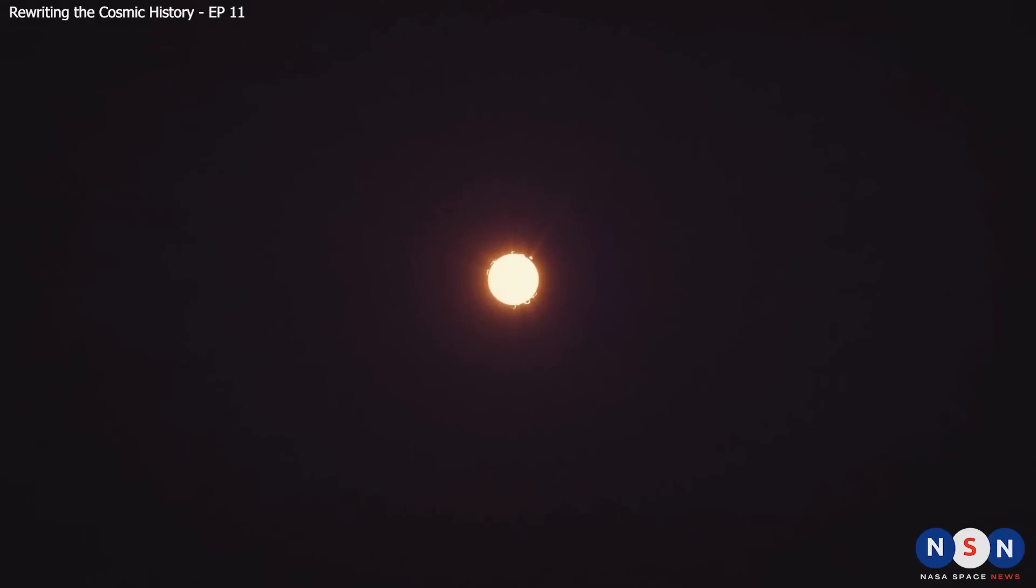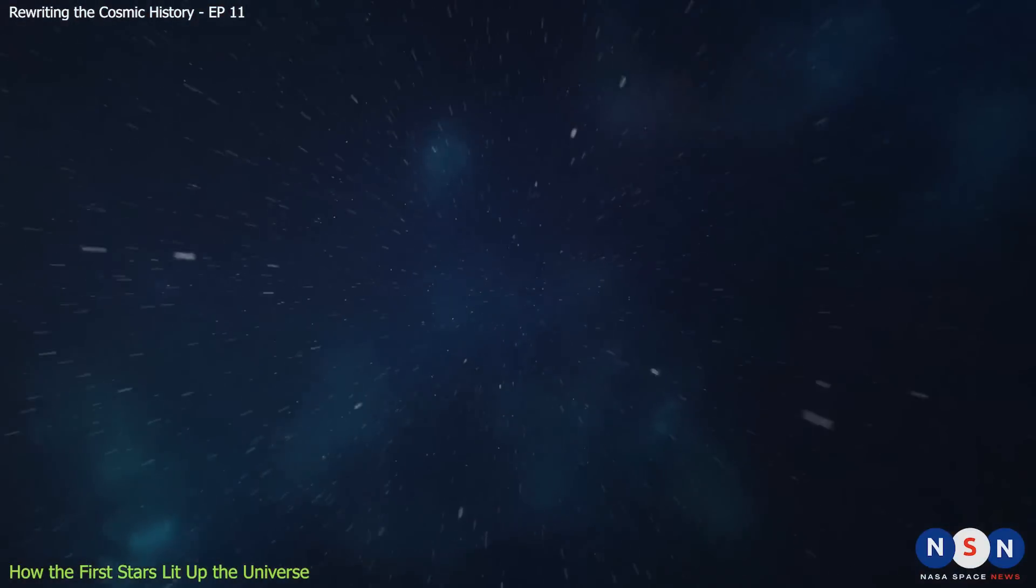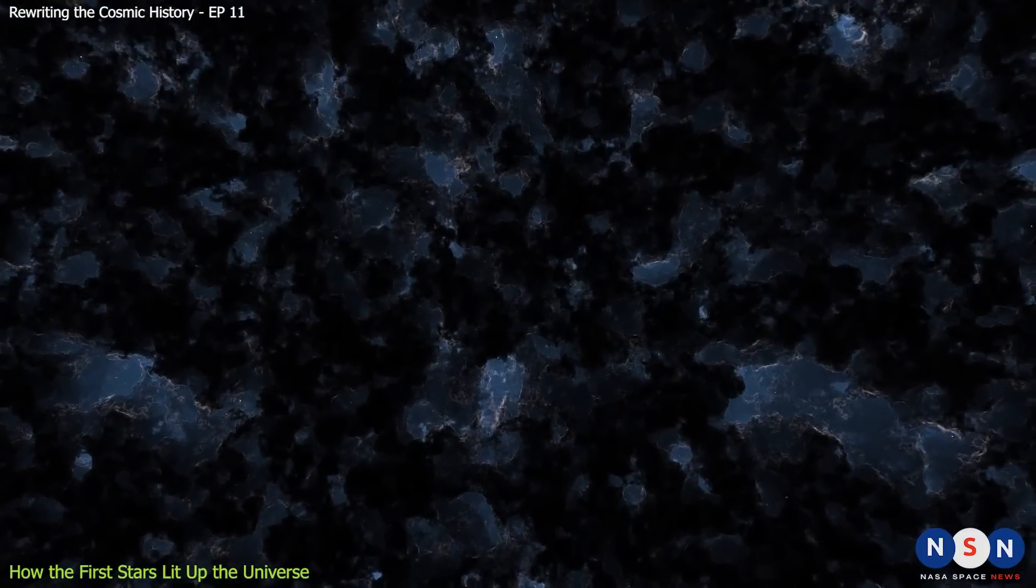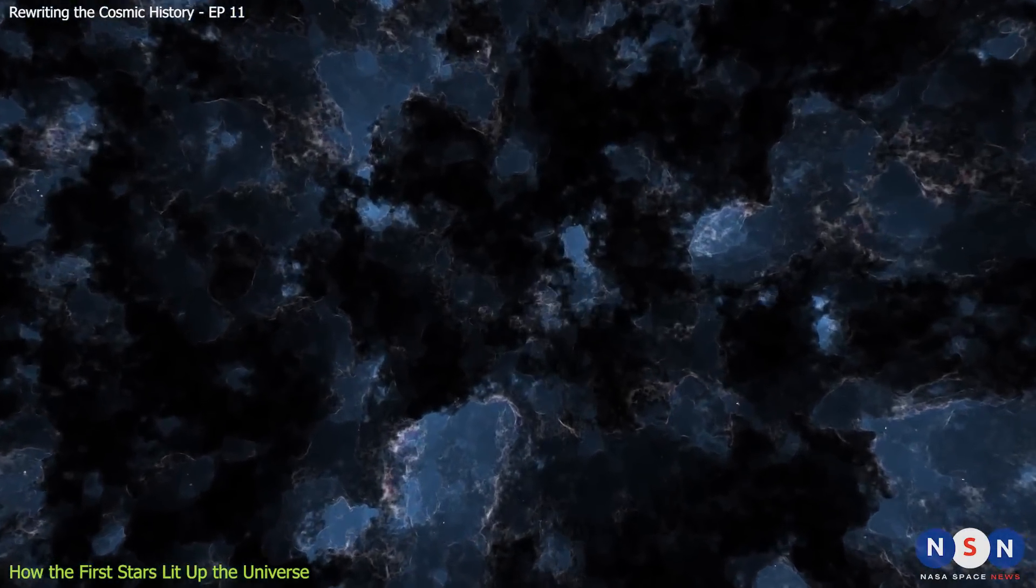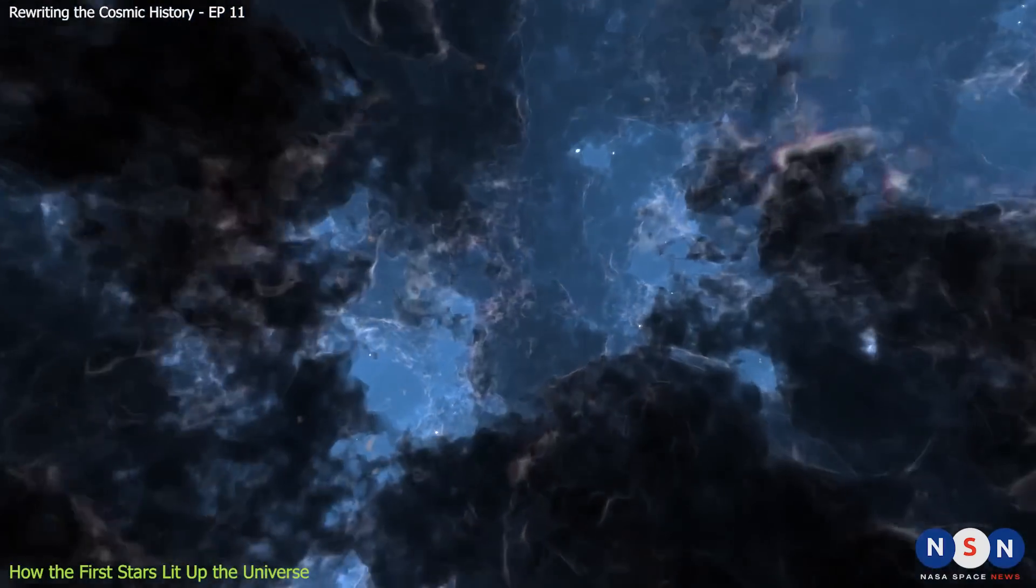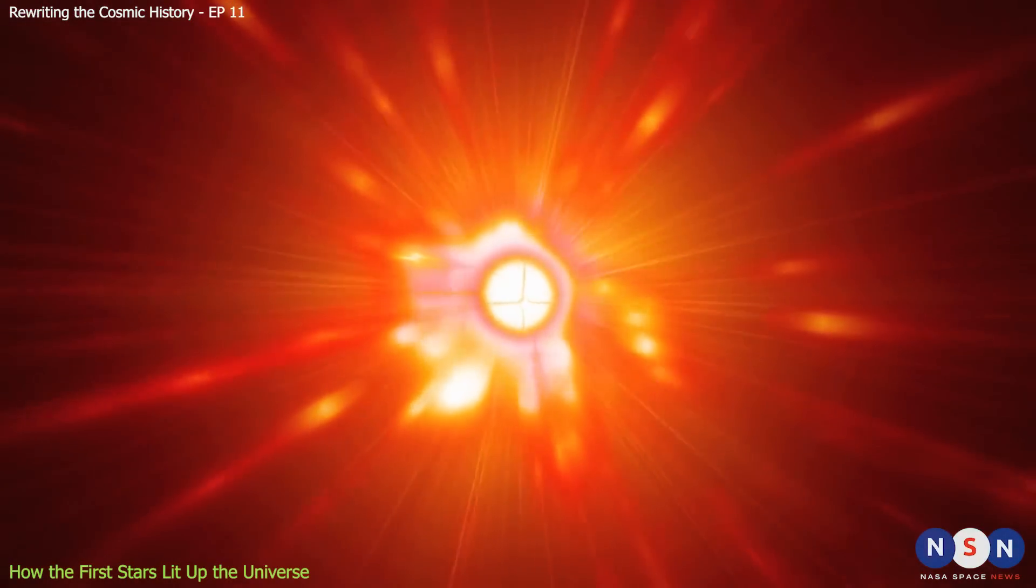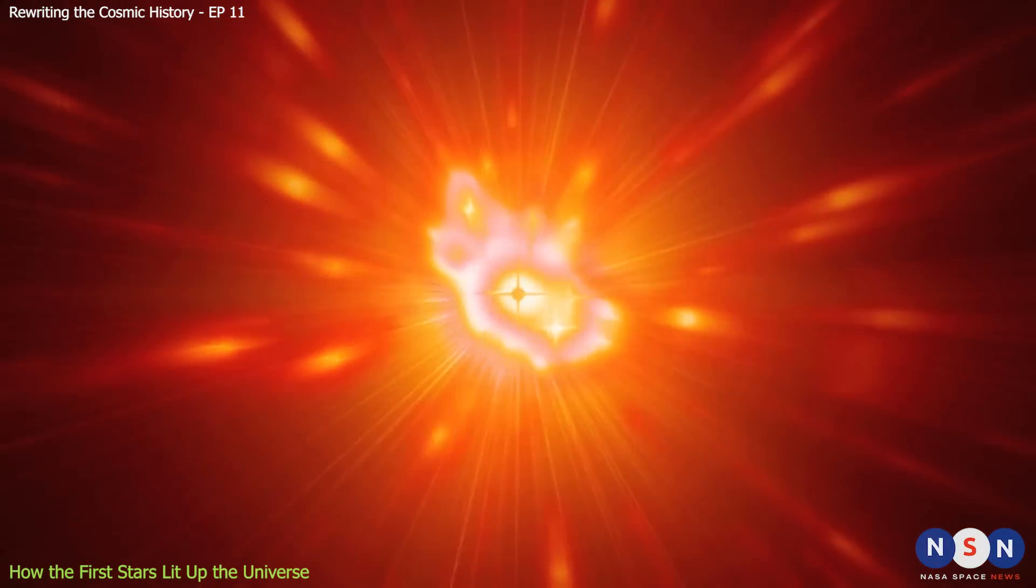To understand Pop 3 stars, we need to go back to the very beginning of the universe, about 13.8 billion years ago. That's a mind-blowing amount of time, and for most of it, there was nothing but darkness in the universe. But how did this darkness end? And how did the first stars come to be?